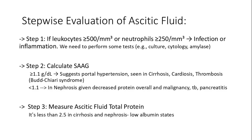Step 2 involves calculating the serum-ascites albumin gradient (SAAG). A SAAG ≥1.1 g/dL indicates portal hypertension, commonly associated with cirrhosis, cardiac ascites from right heart failure, or Budd-Chiari syndrome (hepatic vein thrombosis). A SAAG <1.1 g/dL suggests non-portal hypertensive causes such as nephrotic syndrome, malignancy, tuberculosis, or pancreatitis.